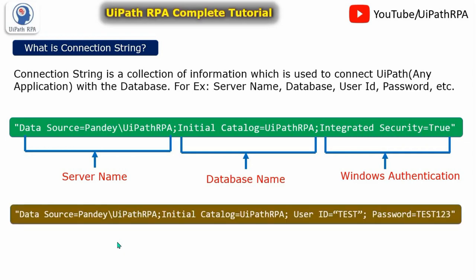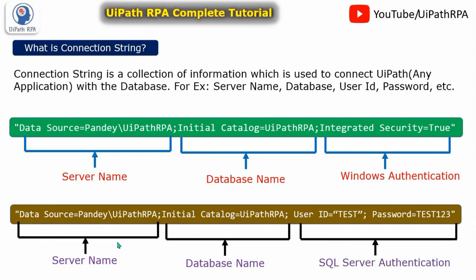If you are using Windows Authentication, it will show integrated security equal to true. Now, this is the connection string for SQL Server Authentication. This is again the server name, and this is the database name. If you use SQL Server Authentication, the slight difference is that it will show the user ID and the password, so you have to provide the actual user ID and password there.